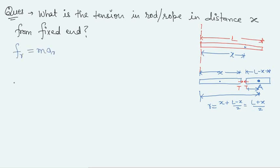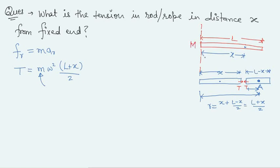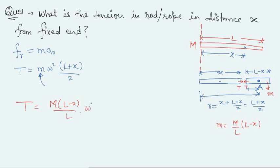Writing the radial equation for the (L − x) segment: the only radial inward force is tension T, so T = m·ω²·r. The mass of this segment is (M/L)·(L − x), where M is the total mass of the rod. Substituting: T = (M/L)·(L − x)·ω²·(L + x)/2, which simplifies to T = Mω²(L² − x²) / (2L). This is the tension at distance x from the fixed end.